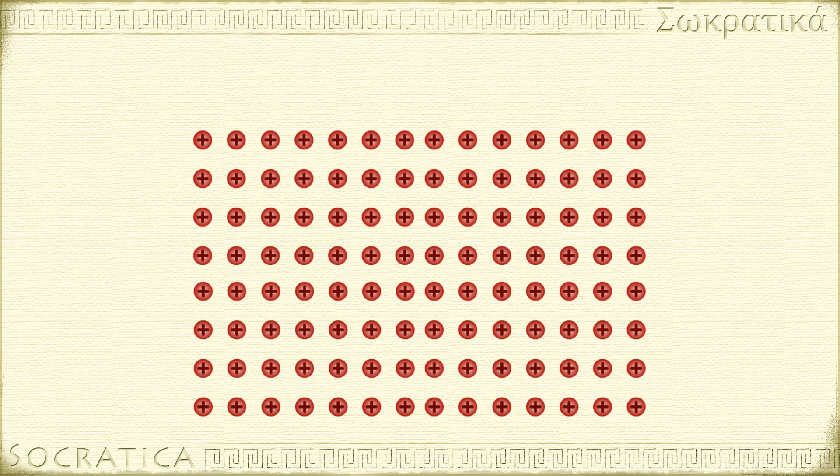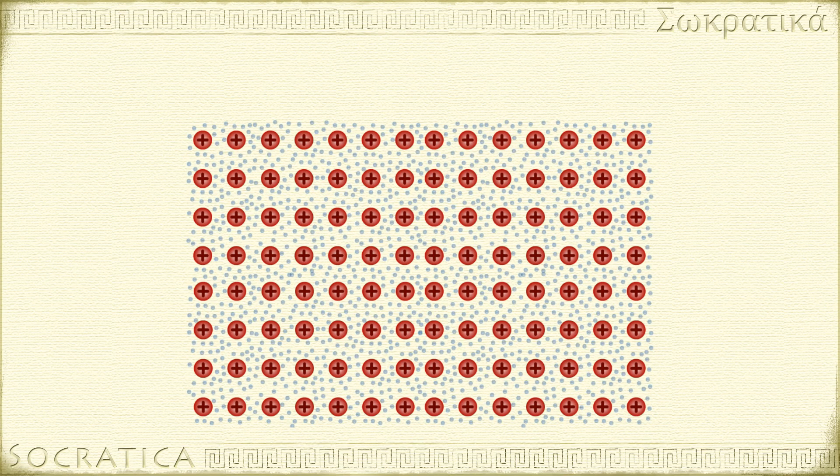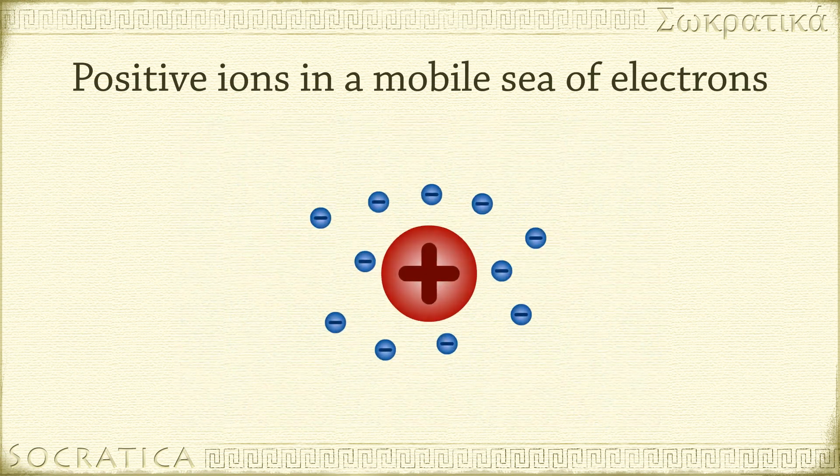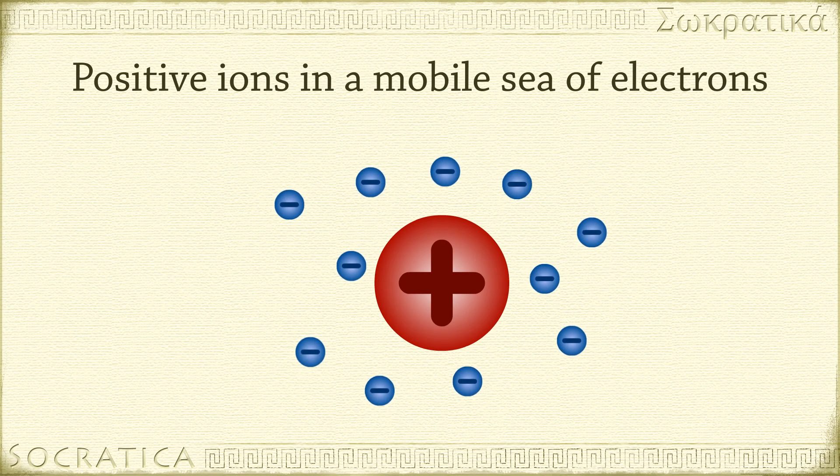Metals are made up of positive ions, closely packed together in crystalline solids. The positive ions are surrounded by a mobile sea of electrons. These valence electrons are free to move away from their atoms of origin.